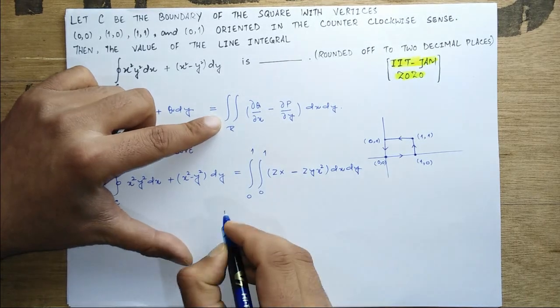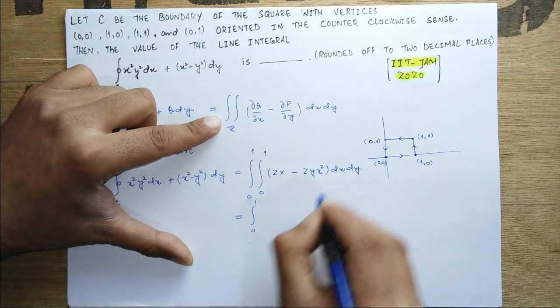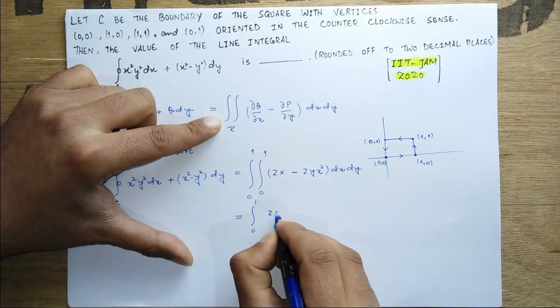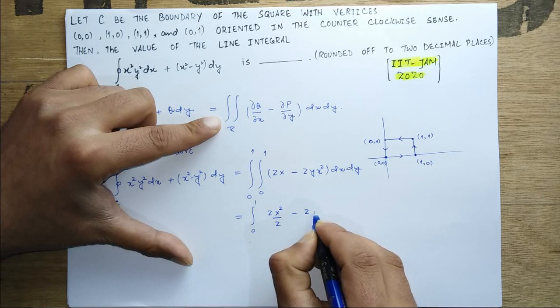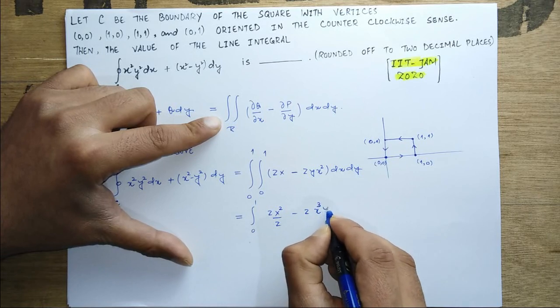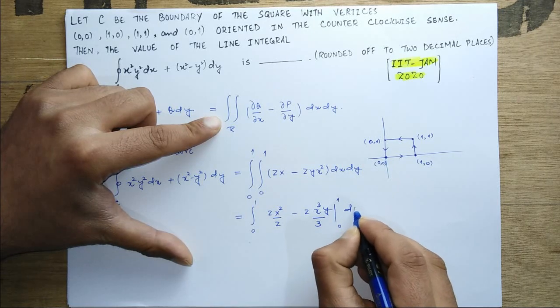So we can now integrate it. First with respect to x, we will get 2 times x²/2, then you have minus 2 x³ y / 3, and then you have the limits from 0 to 1, dy.